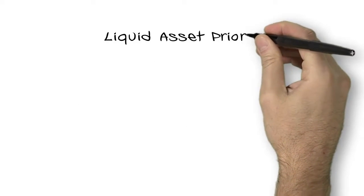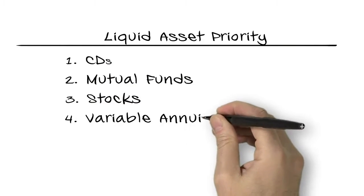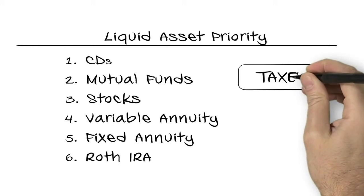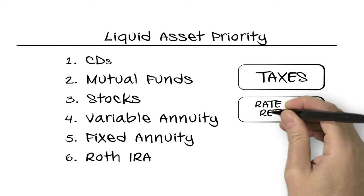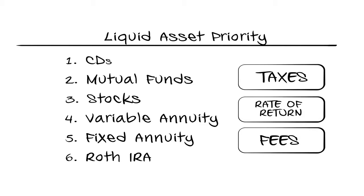Each account type like CDs, mutual funds, stocks, etc. is separated by three major characteristics. These characteristics allow a gain or loss in efficiency depending on the order you distribute assets, having huge implications on your future financial stability.